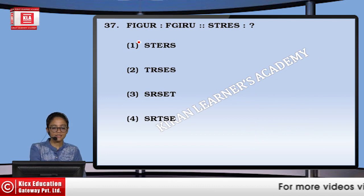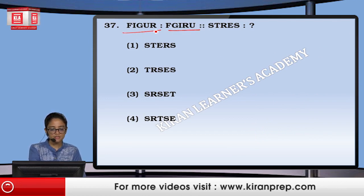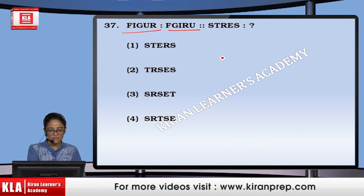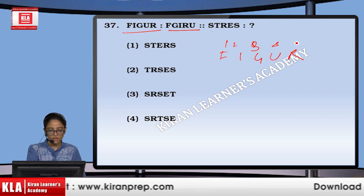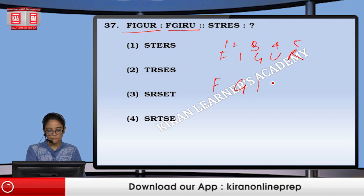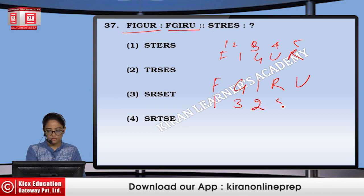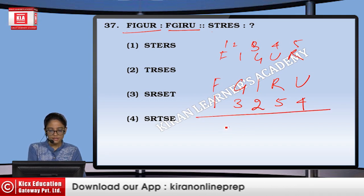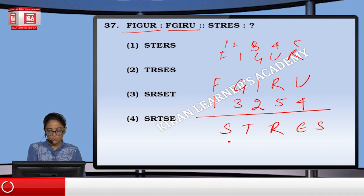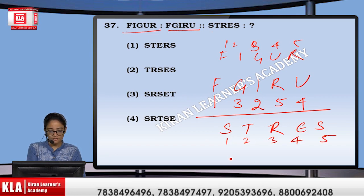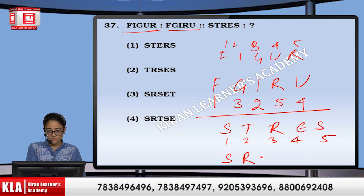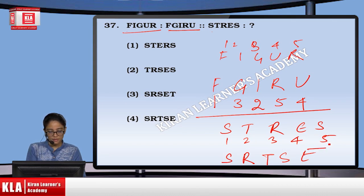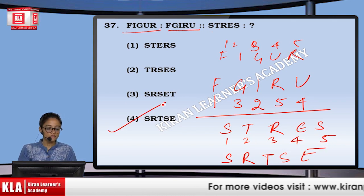Next, again it is rearrangement of letters — the first letter remains the same. For FIGUR: positions 1, 2, 3, 4, 5 rearranged as 1, 3, 2, 5, 4 gives FGIRU. For STRES with positions 1, 2, 3, 4, 5, we write 1st S, then 3rd R, then 2nd T, then 4th S, then 5th E — that becomes SRTSE. That means option number 4th.